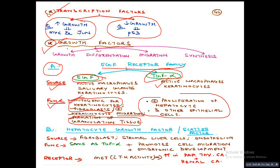The second growth factor is hepatocyte growth factor (HGF), also called scatter factor. Its source is fibroblasts, stromal liver cells, and endothelium. Functions: it causes proliferation of hepatocytes, promotes cell migration, and aids embryonic development. Its receptor is MET. Clinical application: MET receptors are increased in papillary thyroid carcinomas and renal cancers.